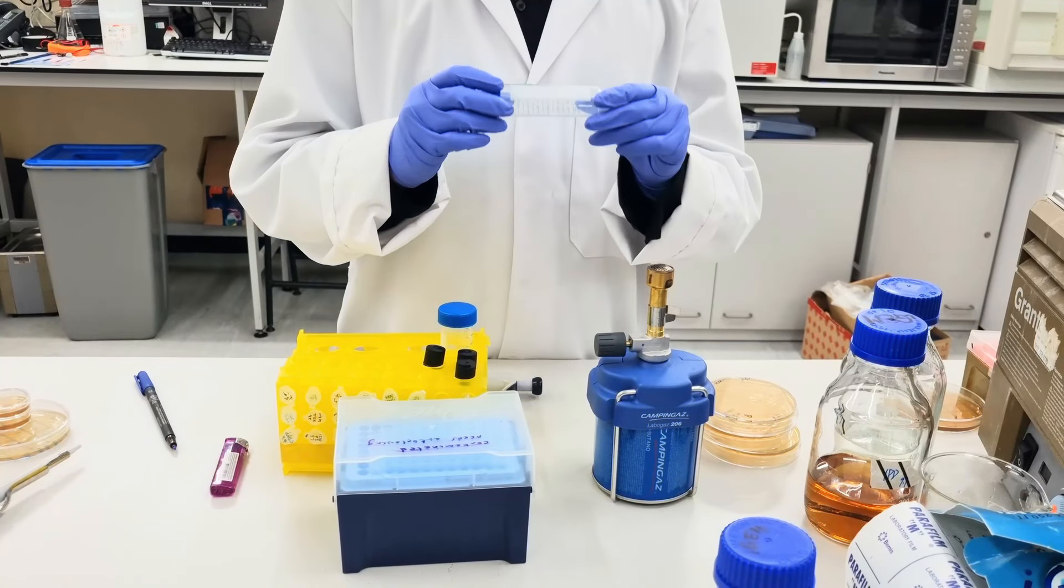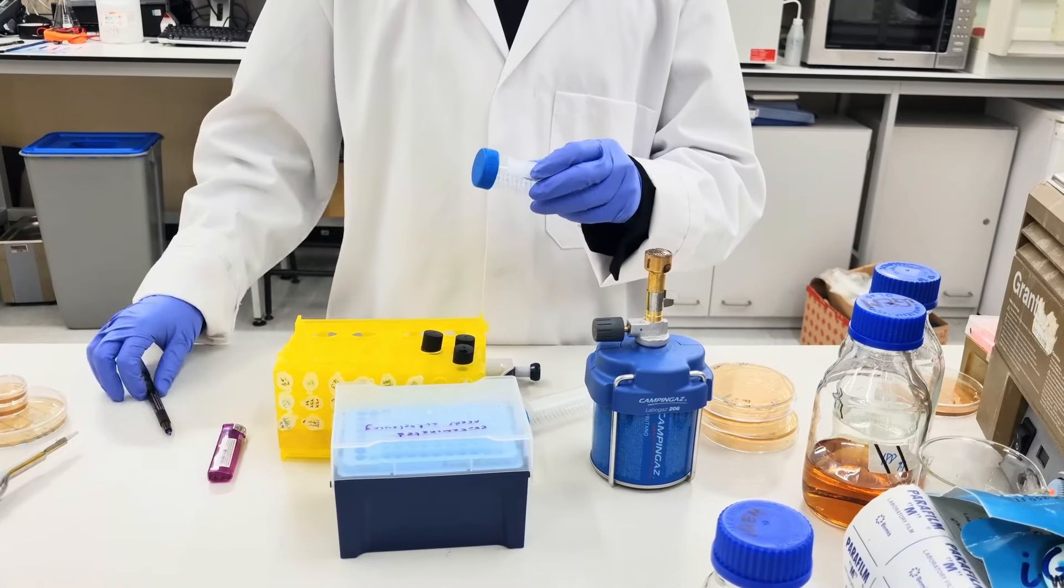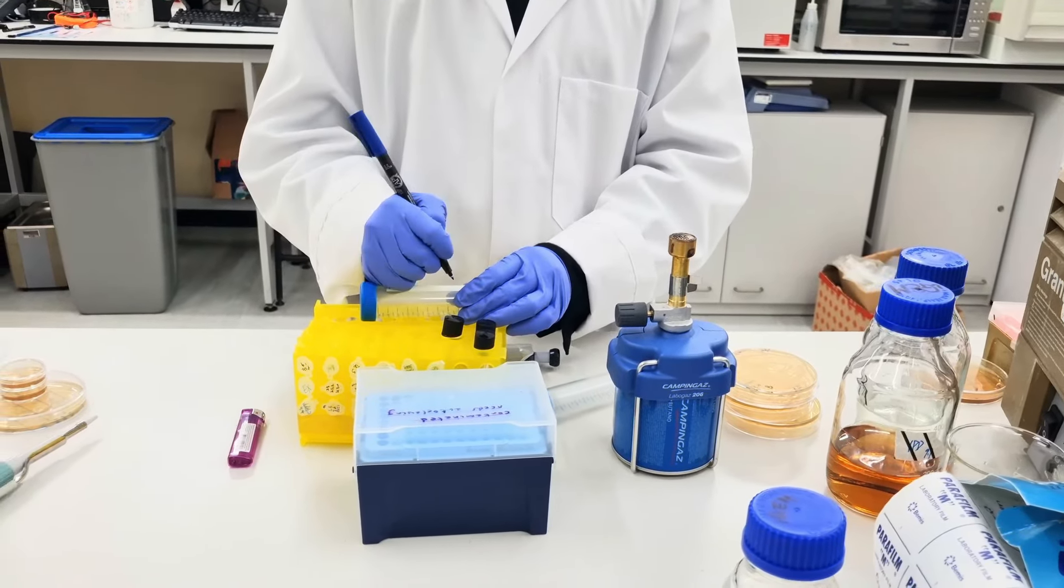The first step is to take two clean falcon tubes and label them with the names that you want to distinguish between other falcon tubes.